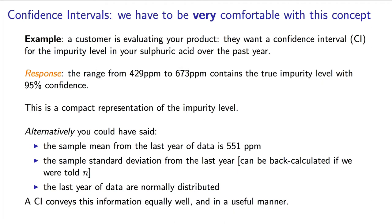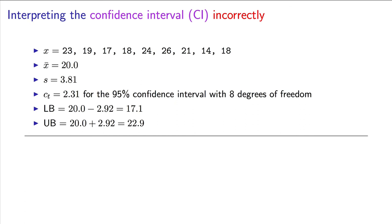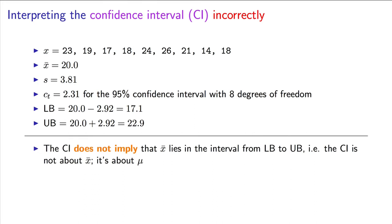I would like to return back to the prior example where we had these 9 values. The mean was 20, and we calculated the confidence interval with a lower bound of 17.1 and an upper bound of 22.9 when using the sample standard deviation. I want to explain what the confidence interval does not imply. It does not imply that x-bar, the sample average, lies in the interval from 17.1 to 22.9. It is true that x-bar will always lie within this bound. That was how the bounds were calculated. The confidence interval is not about x-bar.